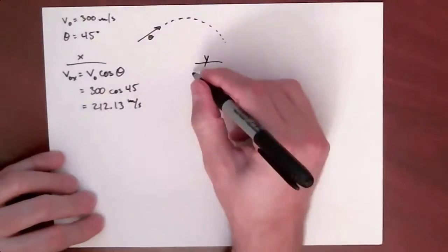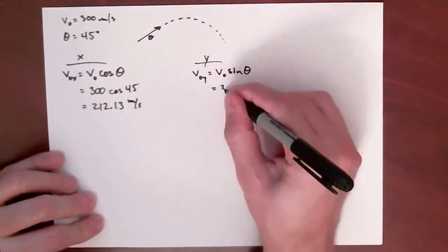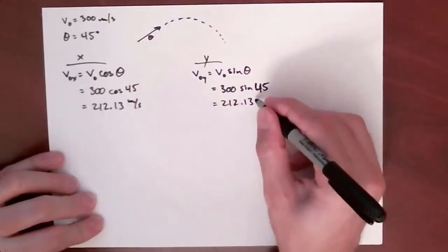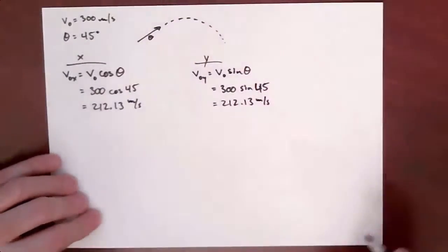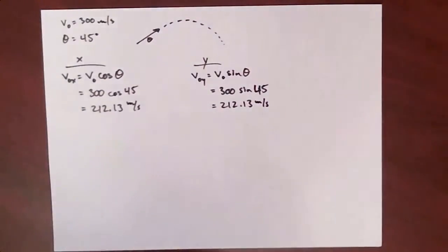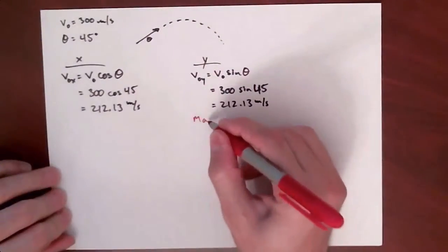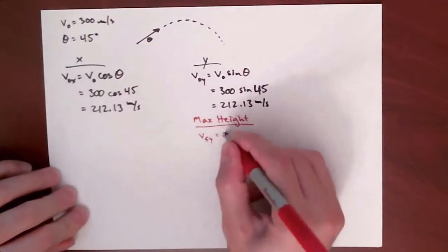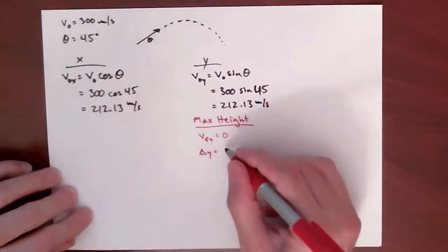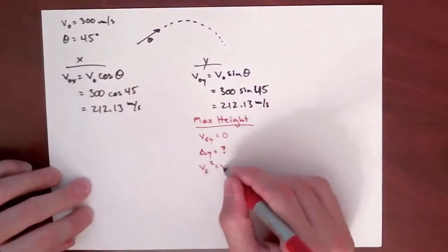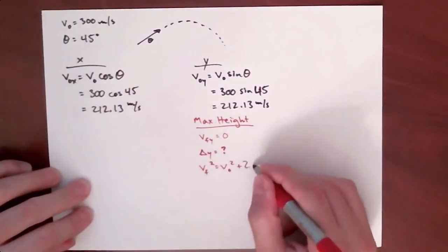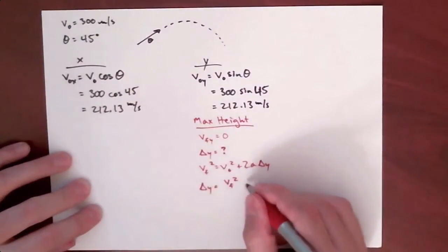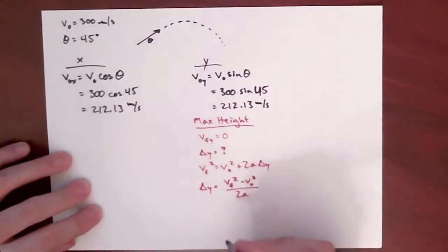The first part of this problem wants us to find the maximum height of this projectile. At the maximum height, the final velocity in the y direction is zero. We're going to use that to figure out our maximum height. We don't have time, so that's why we use this equation.